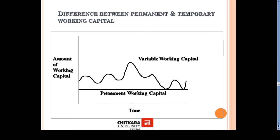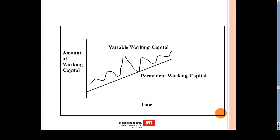This diagram shows the basic difference between permanent and temporary working capital. The minimum amount of funds that a business requires to run its daily activities is termed permanent working capital. The amount over and above that, which is incurred by the organization and keeps changing as per the requirement and circumstances of the business, is termed variable working capital. Another diagram also illustrates this same relationship.